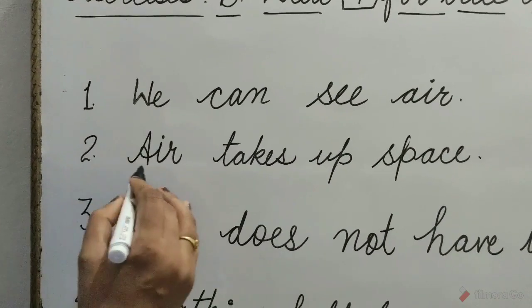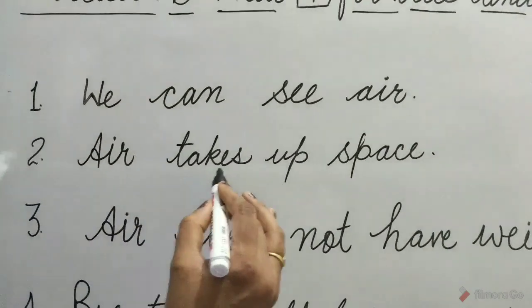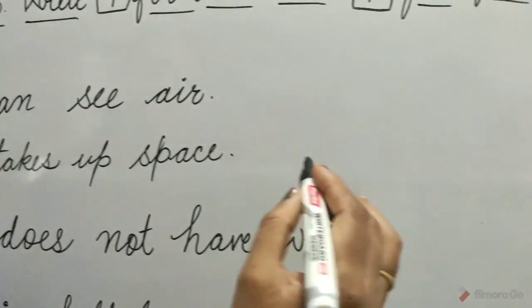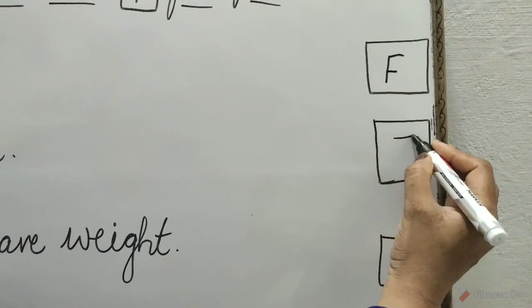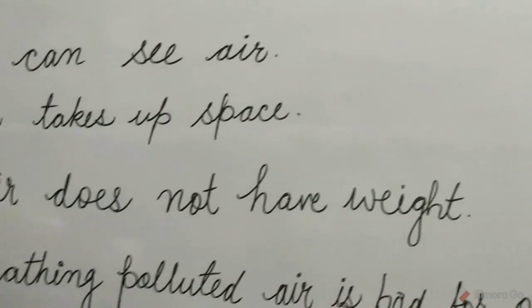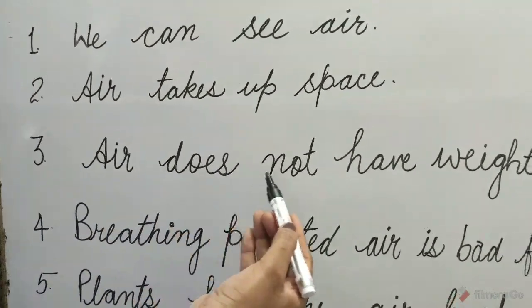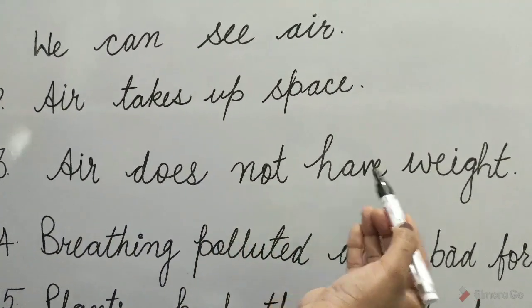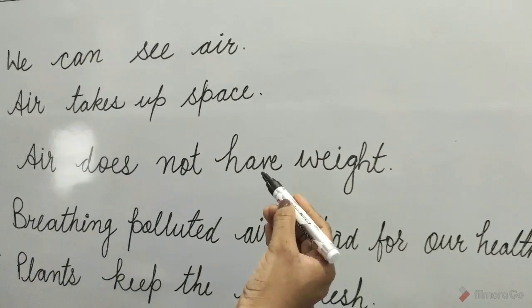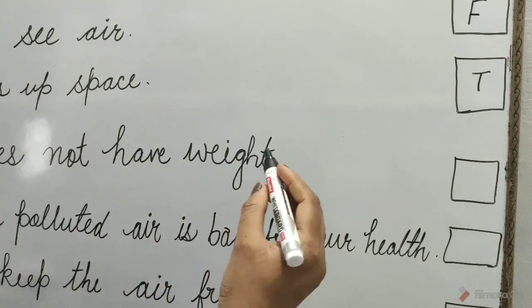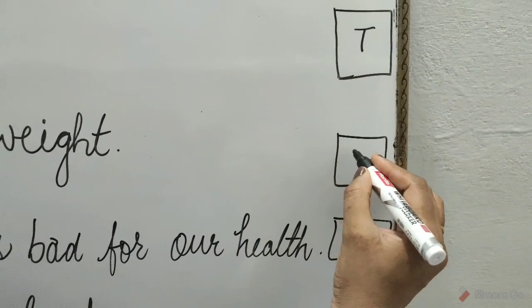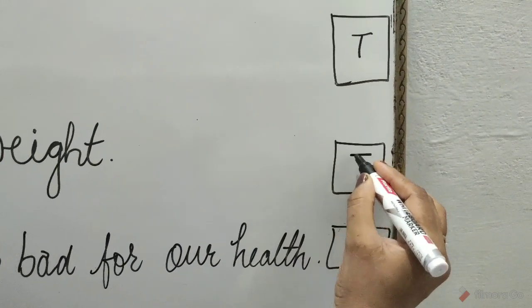Question 2: Air takes up space. Yes children, it is true. So write here T. Question 3: Air does not have weight. No children, it is false — air does have weight. So write here false.